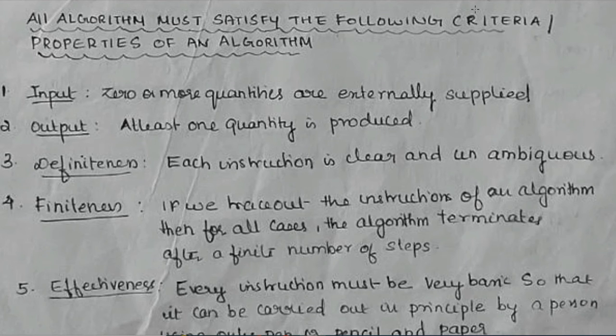Next is definiteness. Each instruction, whatever you are writing in algorithm, should be clear and unambiguous. Suppose you are going to read two numbers. Say, read A, read B and sum is equal to A. The steps of this instruction is never clear.